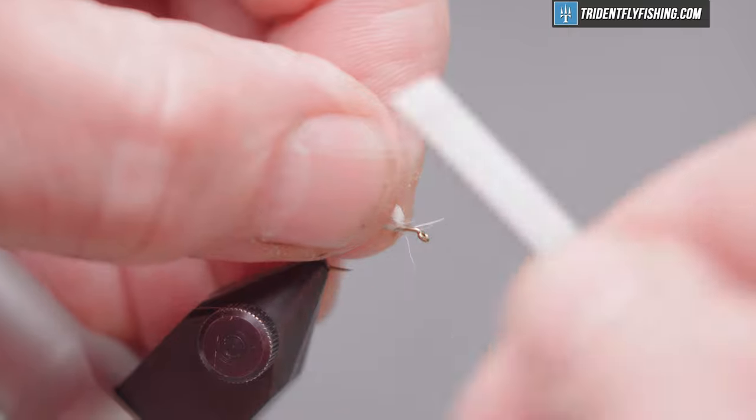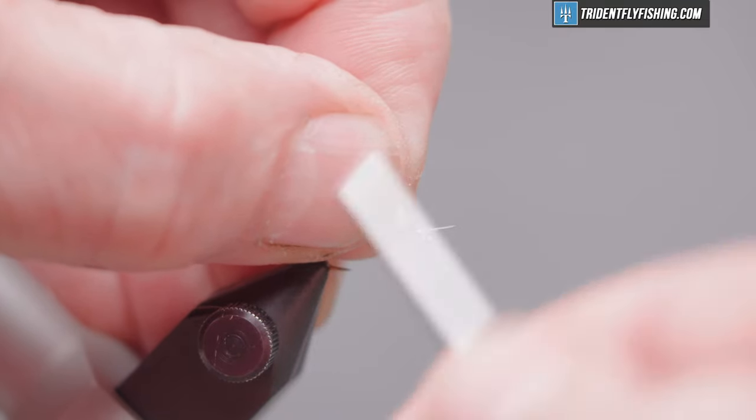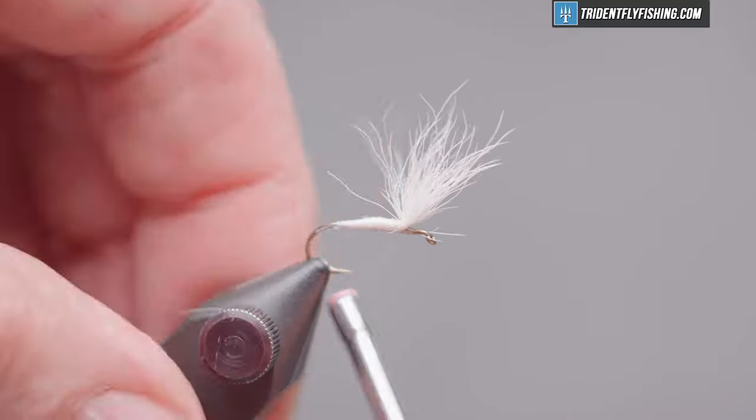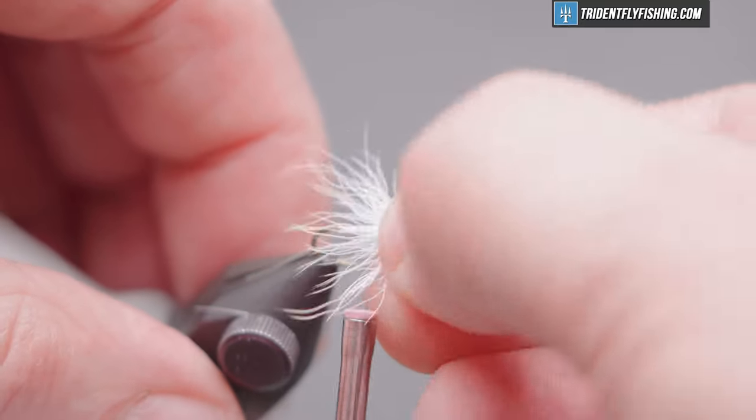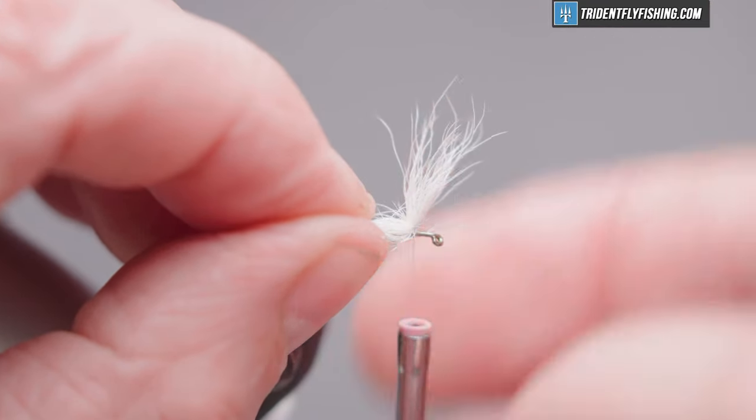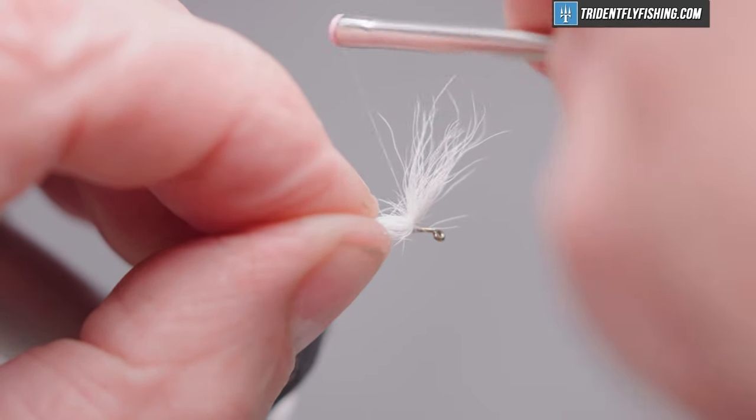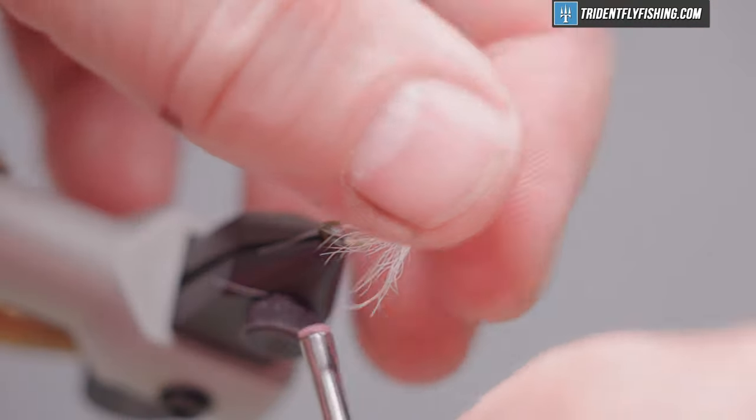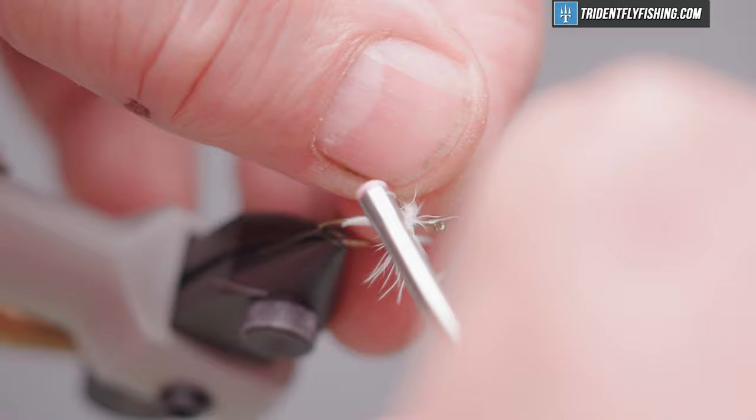Now we'll jump our thread in front. We want a good dam to help stand that wing up. And we'll flatten it out with our fingers to help us separate out two wings. And then with some crossing wraps, we'll separate those.